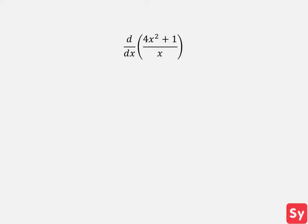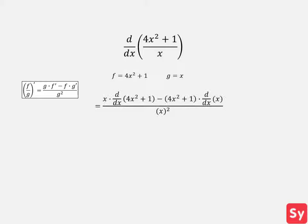Next example, we want to compute the derivative of 4x squared plus 1 over x. We see that we have one function f divided by another function g, so we can use the quotient rule. This equals x times the derivative of 4x squared plus 1, minus 4x squared plus 1 times the derivative of x, all over x squared.